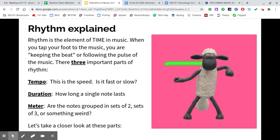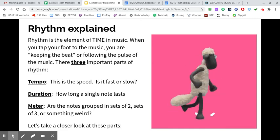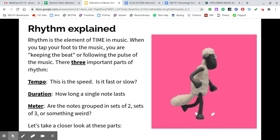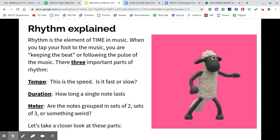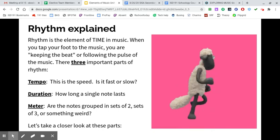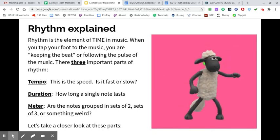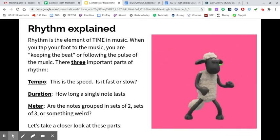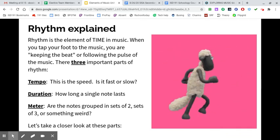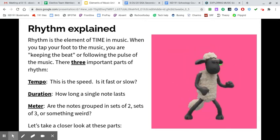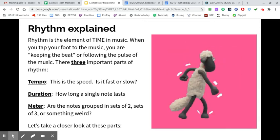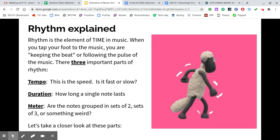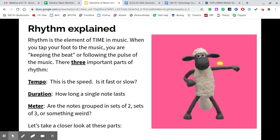The first one is tempo. Tempo is the speed, or how fast or slow the music is being played. The second one is duration, and duration is how long a single note lasts. And then a tricky word called meter, and meter are the notes and how they're grouped. So are they grouped in sets of two, sets of three, or a different setting? Those are your three important parts of rhythm. Let's take a closer look at each of these.